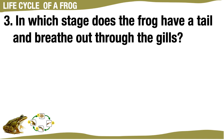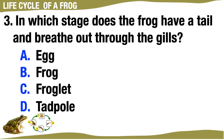In which stage does the frog have a tail and breathe through gills? A. Egg. B. Frog. C. Froglet. D. Tadpole. The correct answer is D, Tadpole.